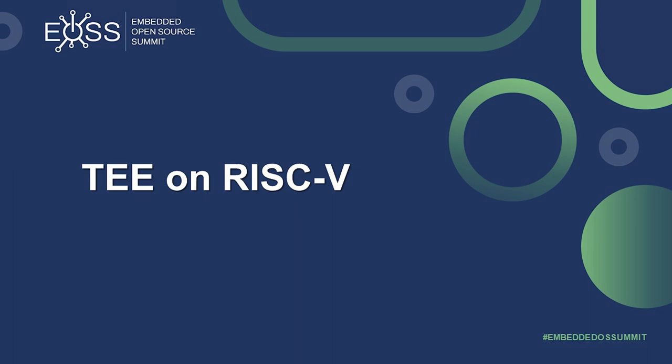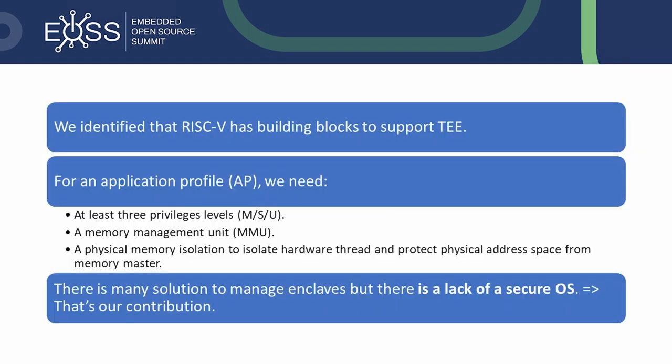Now let's move on to TEE on RISC-V. A successful way of supporting TEE in modern systems is to create separate environments already at the silicon level, to pose the basis for the isolation concepts just introduced. We identified that RISC-V has the building blocks to support TEE. Generally speaking, for an application profile processor, we need at least three privilege levels, a memory management unit, and physical memory isolation to isolate hardware threads and protect physical address space from memory masters.